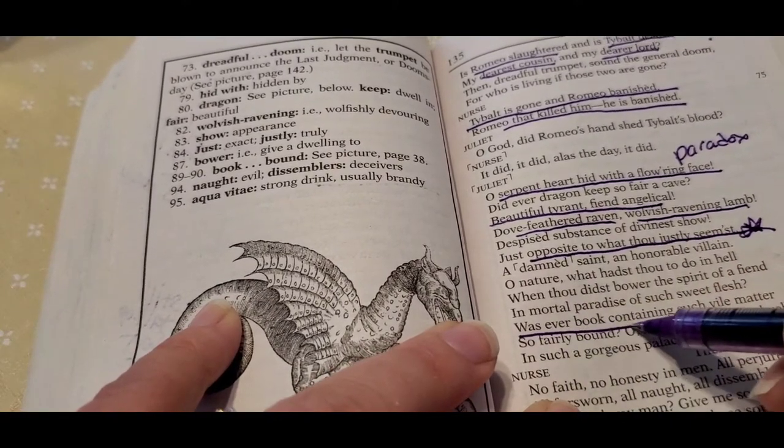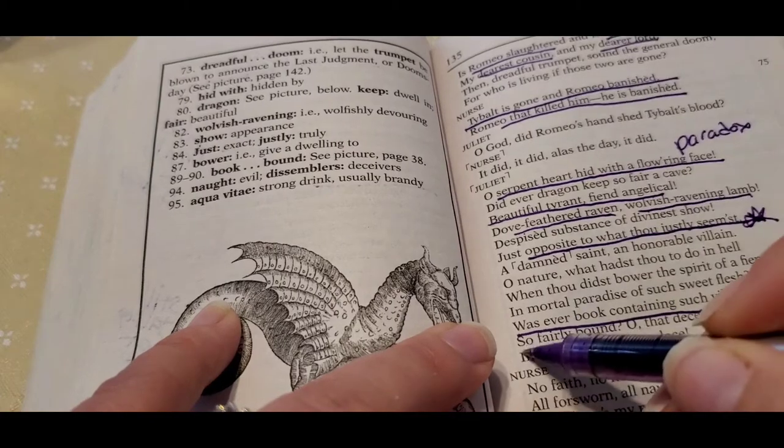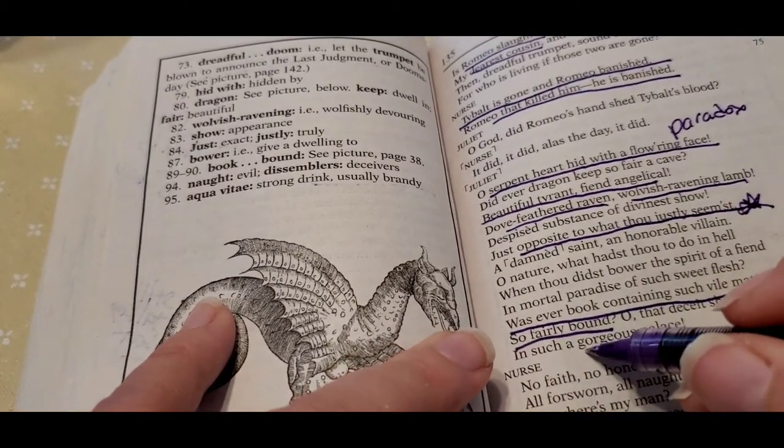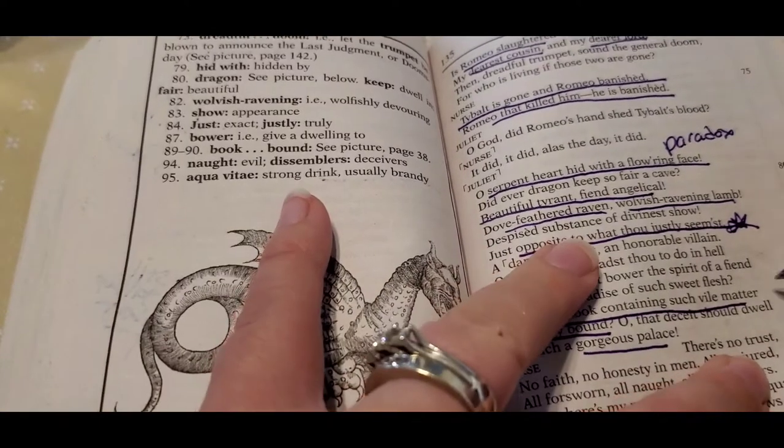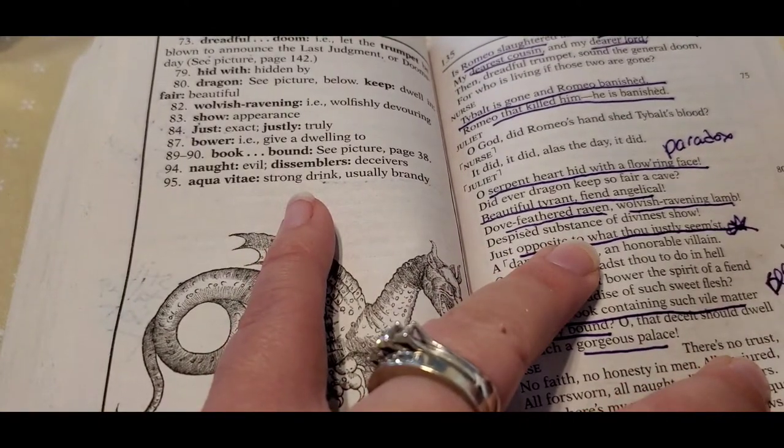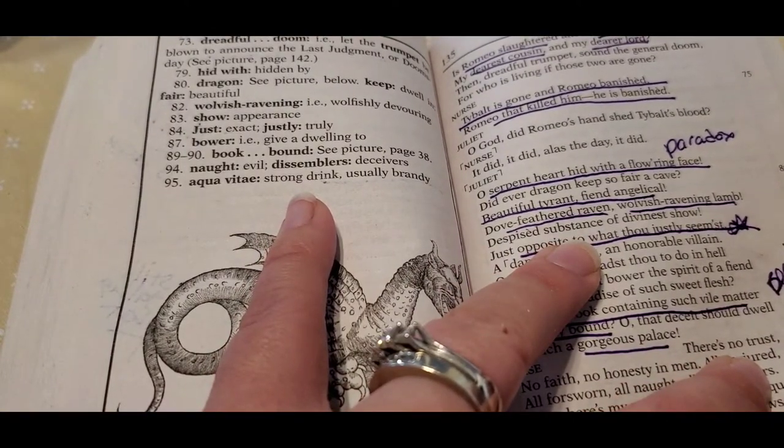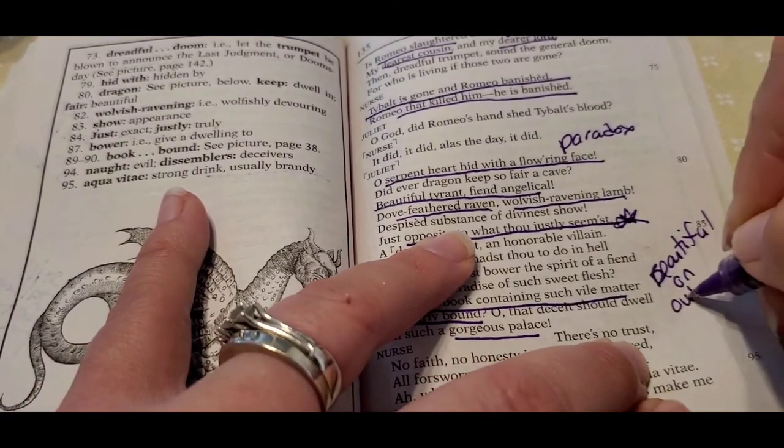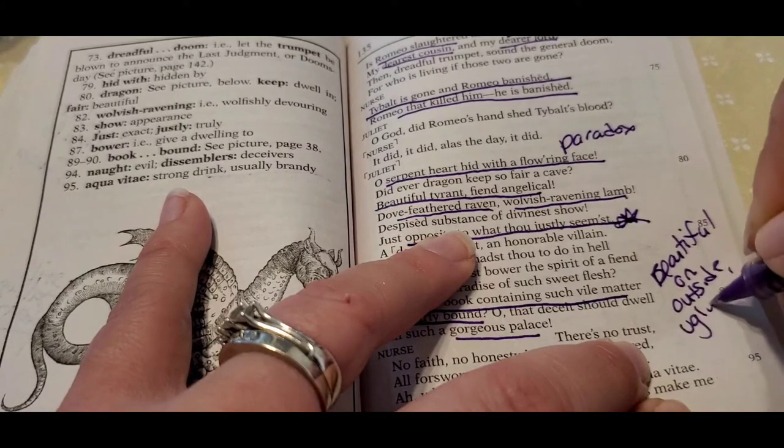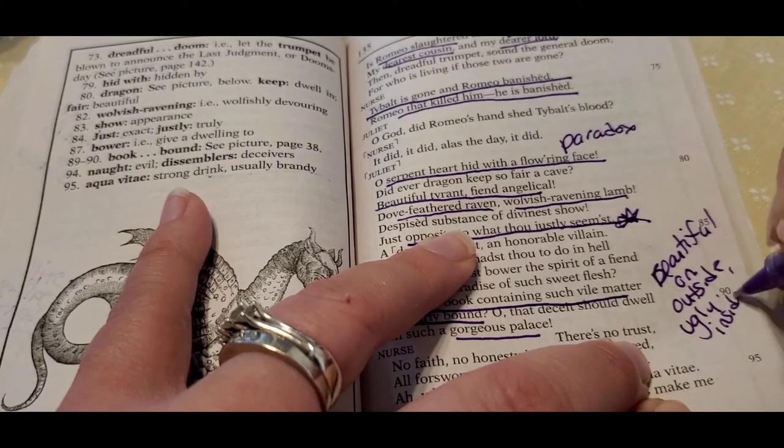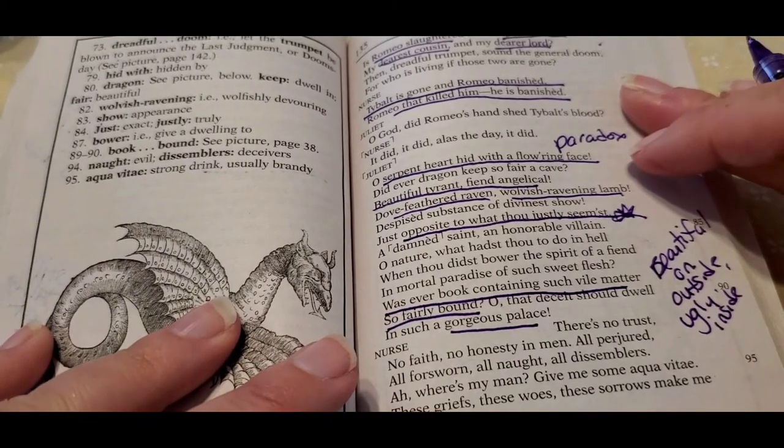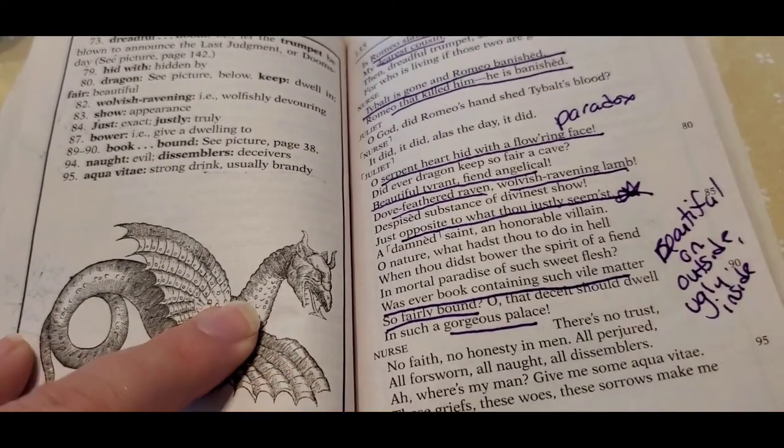And here's your book imagery again. Was there ever a book containing such vile matter so fairly bound? In such a gorgeous palace. Again, this is all about being beautiful on outside, ugly inside. Cause you know, she really knows him so well. It's been like, ah, you know, 24 hours at the most.